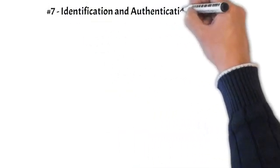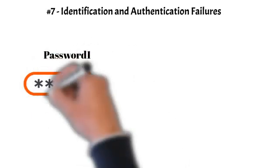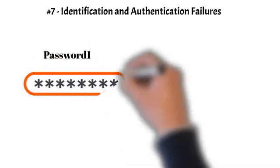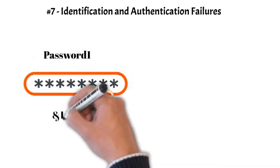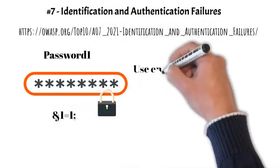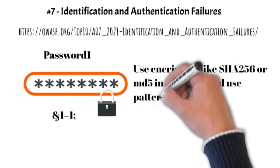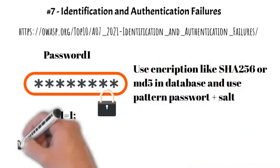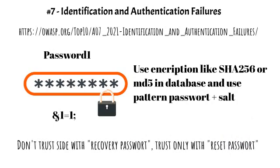Number 7: Identification and Authentication Failures. Previously called broken authentication, sliding down from the second position, it now includes CWEs more related to identification failures. This category is still an integral part of the top 10, but the increased availability of standardized frameworks seems to be helping.